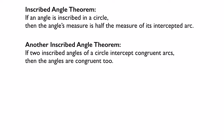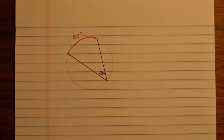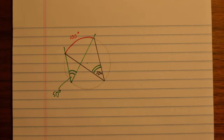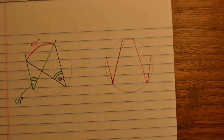Here's another theorem. If two inscribed angles intercept congruent arcs, then the angles are congruent too. So if the black angle cuts off 100 degrees and the green angle also cuts off 100 degrees, both angles are congruent. Similarly, if two angles intercept congruent arcs — maybe not the same arc, but the same amount — those two angles are congruent.